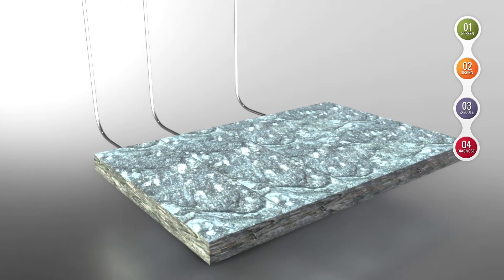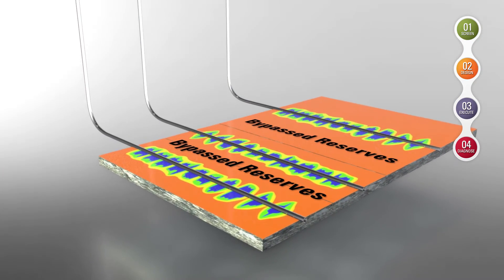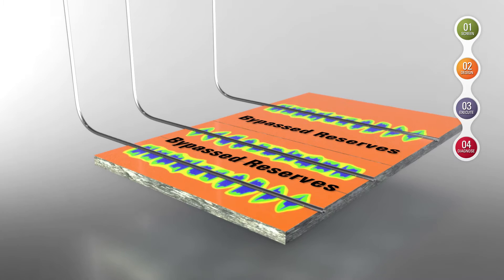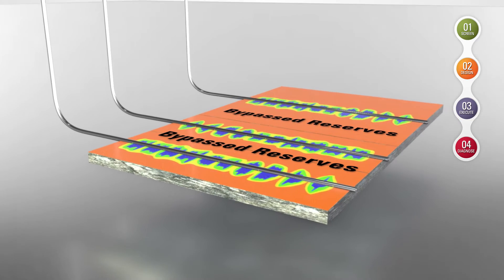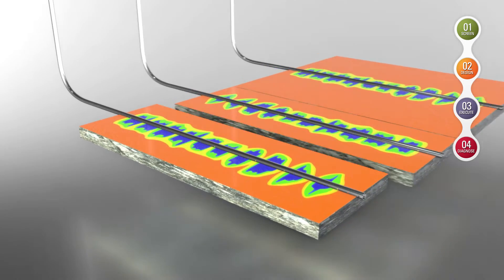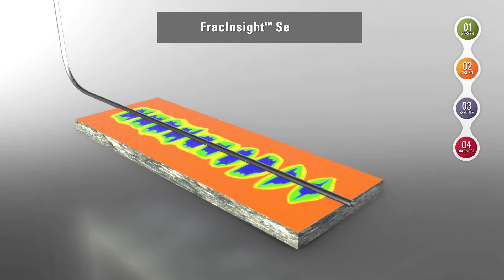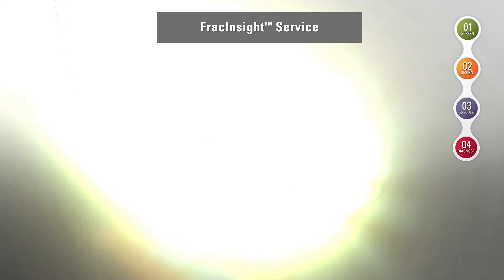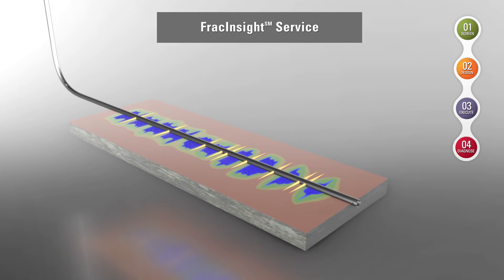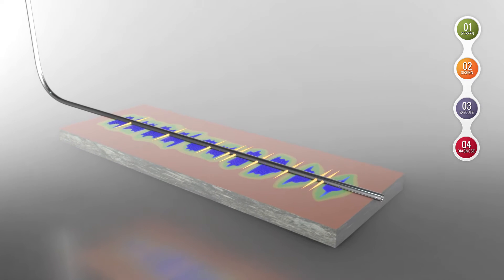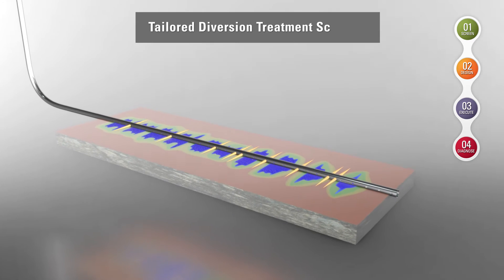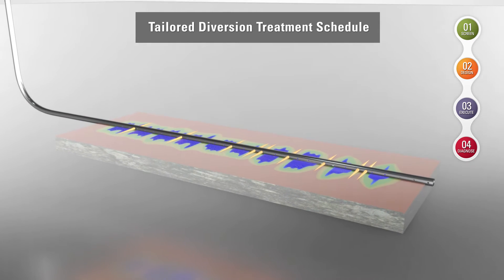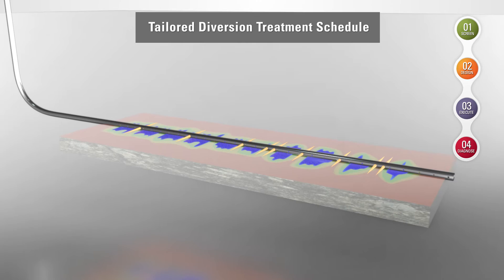In Step 2, we design the refract to help maximize asset recovery potential. With Frac Insight Service, we identify proppant targets and strategically place new perforations. We tailor the diversion treatment schedule to target bypassed reserves.